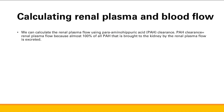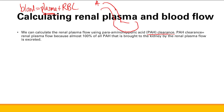Now let's talk about calculating renal plasma flow and blood flow. Blood equals plasma plus red blood cells. We can calculate plasma flow using para-aminohippuric acid (PAH) clearance, because PAH clearance equals renal plasma flow. Almost all of the PAH brought to the kidney by the renal plasma flow is excreted — it is completely filtered through the glomerulus and then secreted and excreted. Therefore, clearance of PAH equals renal plasma flow.